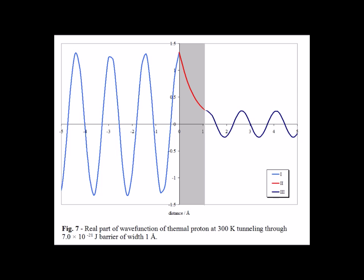Here, our proton at 300 kelvin is tunneling through a barrier 1 angstrom wide through a potential of 7 times 10 to the minus 21 joules.